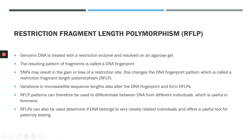We'll begin with a sample of genomic DNA. The genomic DNA is first treated with a restriction enzyme and then resolved on an agarose gel. The resulting pattern of fragments is called a DNA fingerprint, and single nucleotide polymorphisms may result in the gain or loss of a restriction site. When the restriction site is either gained or lost, this changes the DNA fingerprint pattern, and this change in the fingerprint is referred to as a restriction fragment length polymorphism, or RFLP for short.